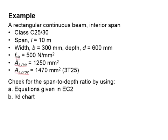Let us try an example to check for the deflection of a beam. The beam is a rectangular continuous beam, interior span. The concrete grade is C25/30, and the span is 10 meters. The beam width is 300 mm and the depth is 600 mm. The specified yield strength of the reinforcement bar is 500 N/mm². The As required is 1250 mm². It is provided with 3T25 bars with a cross-sectional area of 1470 mm².